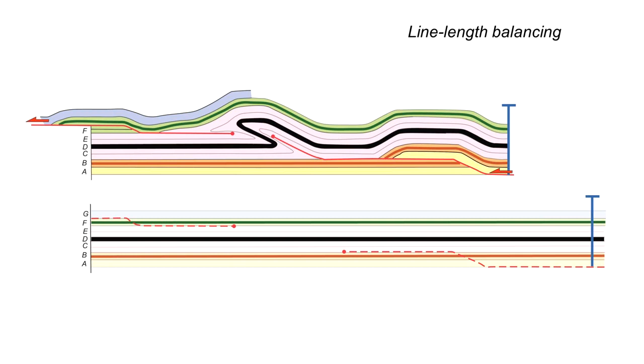Line length or bed length balancing. Let's emphasize that the only deformations that we can apply this method to are for layers that show simply concentric folding or have been offset by faults. We call these rather special beds key beds but of course this is a very narrow range of deformation.